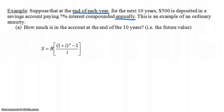How much money would you have at the end of ten years? If you got no interest at all, you'd have $500 × 10 = $5,000. That's the total amount you put in, so I expect the amount at the end of ten years to be more than $5,000.